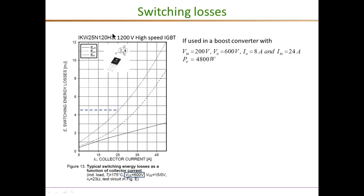This is a state-of-the-art 1200 volt IGBT built as a latest generation high-speed device. If this is used in our boost converter application with a specification of 200 volts input stepping up to 600 volts output with a load current of 8 amperes — corresponding to an input current of 24 amperes — that works out to be a power level of 8 times 600, or 4800 watts. This figure shows the switching energy losses: turn-off losses, turn-on losses, and the total switching energy loss corresponding to 600 volt operation for various collector currents.